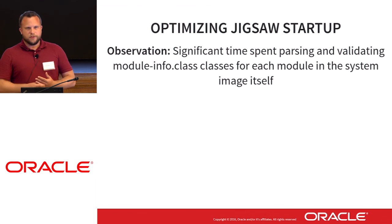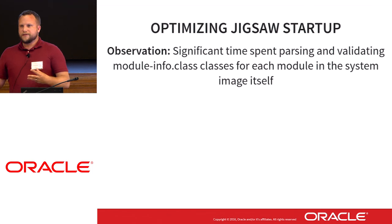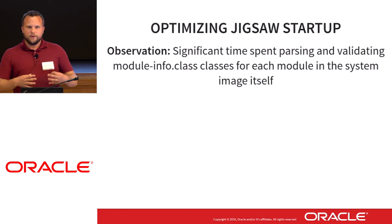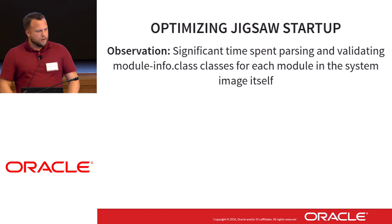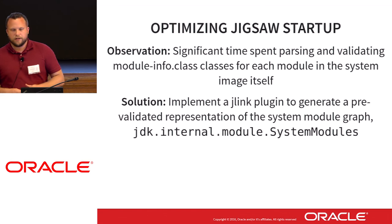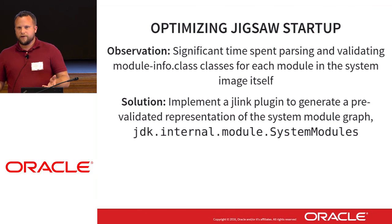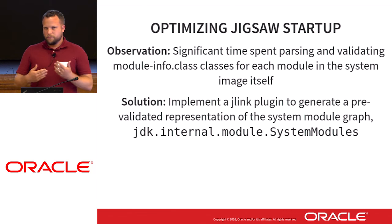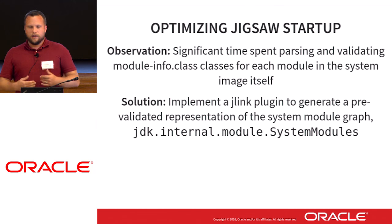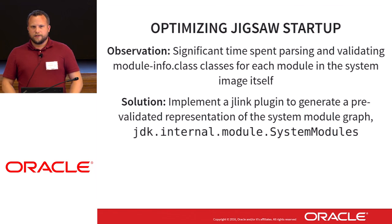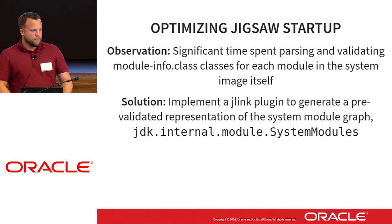For system modules at link time, you kind of know that these modules are consistent — or you could do that validation check beforehand. The solution was to introduce a J-Link plugin to generate a pre-validated representation of the system module graph, generating that as more or less raw bytecode into the JDK internal module system modules, which then returns the list of module descriptors or the graph for the system modules.